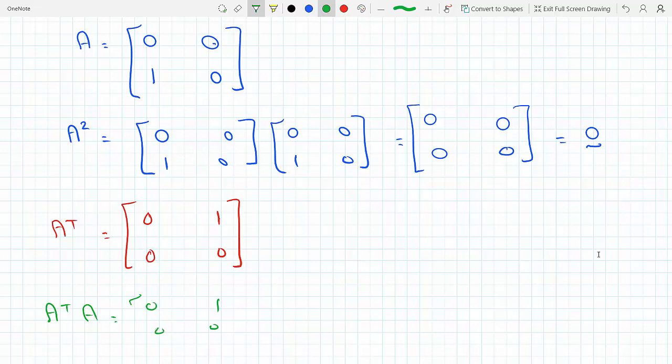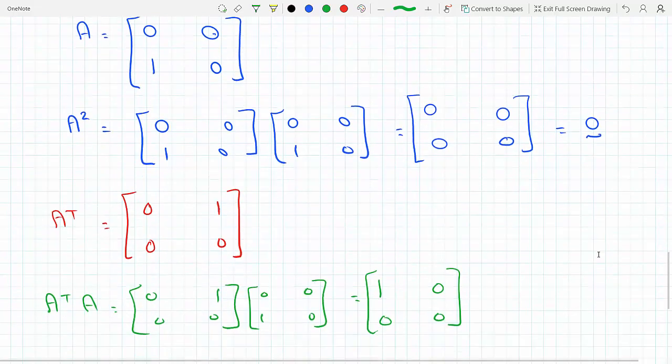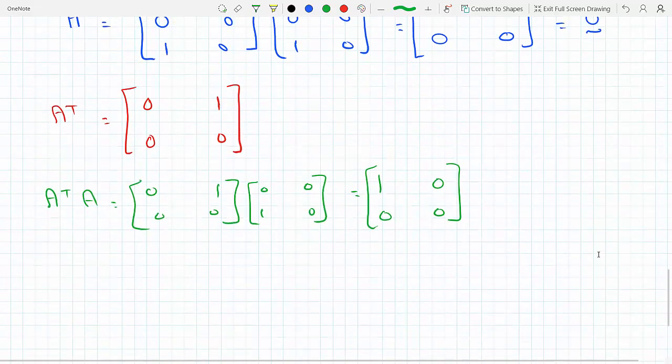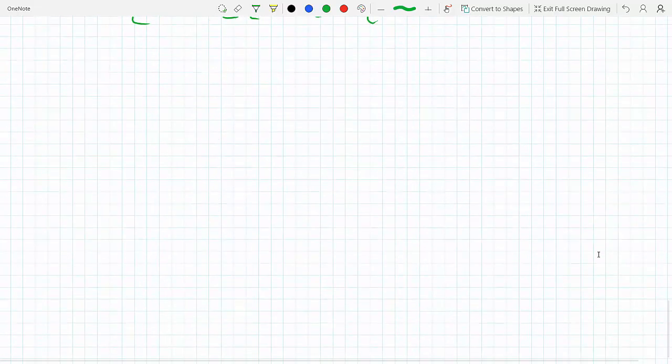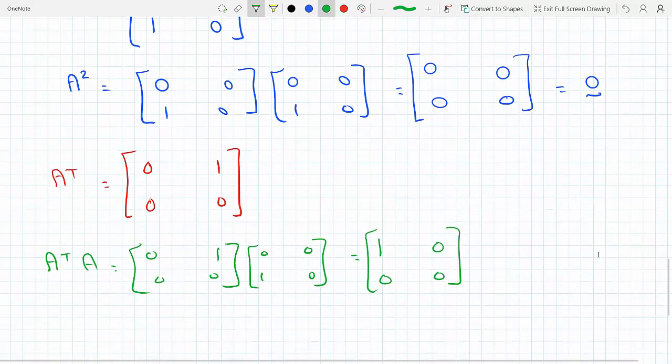If I do A transpose times A here in green, that's [[0,1],[0,0]] times [[0,0],[1,0]]. I will get row times column: one, zero, zero, zero, zero. You can see that although A squared equals zero matrix, A transpose A is not a zero matrix.